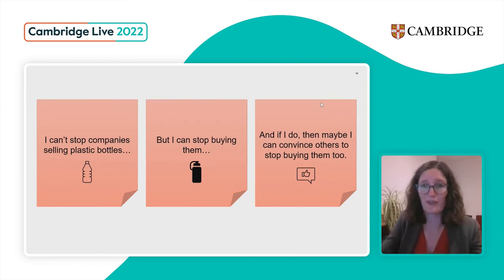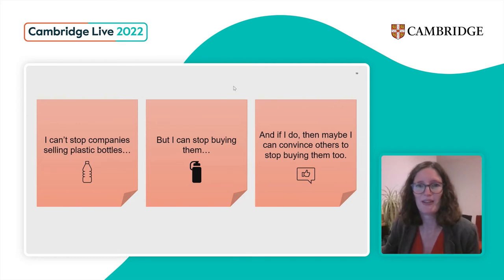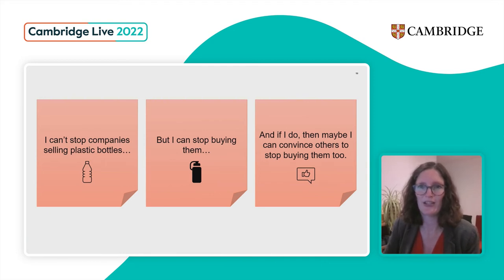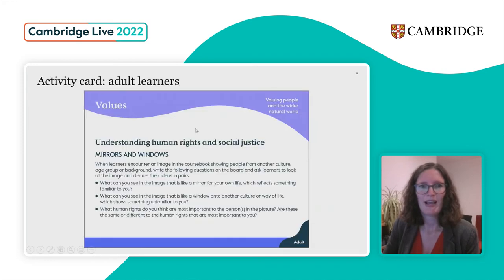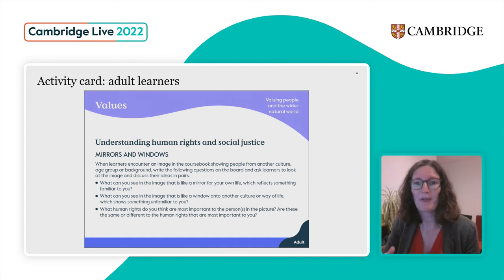It's quite a nice activity to inspire that feeling of agency and a can-do attitude with learners. And finally, an example from adult learners — this is around the area of values and valuing people and the wider natural world. The activity is called Mirrors and Windows.